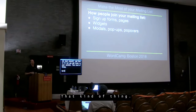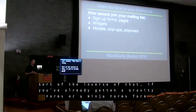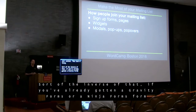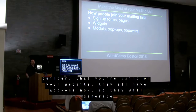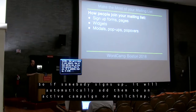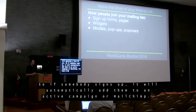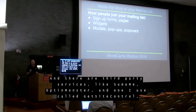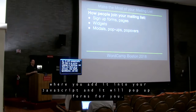The inverse of that: if you've already got Gravity Forms or Ninja Forms on your WordPress site, they all have add-ons so they'll generate a form and automatically add people to ActiveCampaign or MailChimp. And there are third-party services like SumoMe, OptinMonster, and one I use called Get Site Control, where you add a little bit of JavaScript to your website and it'll add forms or pop-overs for you.